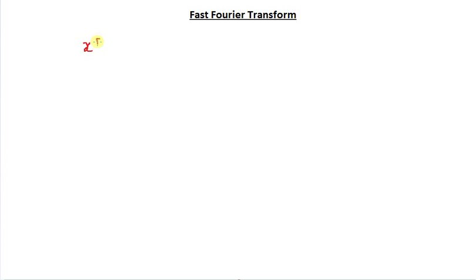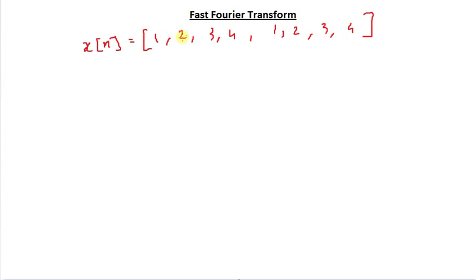What we do is we take a sequence — I'm going to take 1, 2, 3, 4, 1, 2, 3, 4. I'm taking these numbers because I already know the DFT of 1, 2, 3, 4. What I do is divide this into two halves, conquer each of these halves by finding the DFT of each half, and then write them as two separate rows of a matrix.